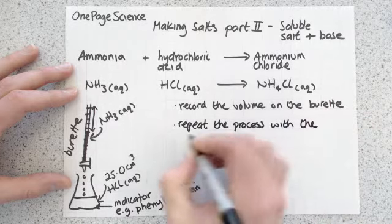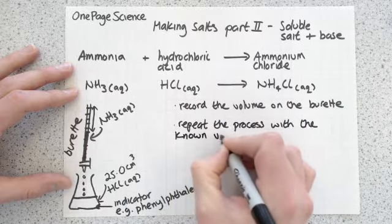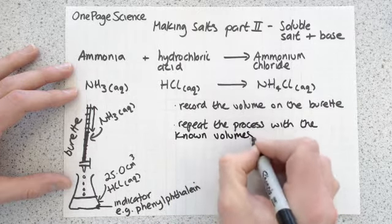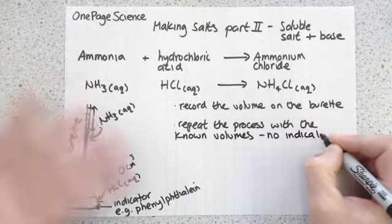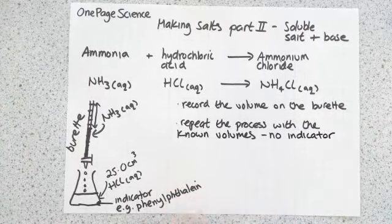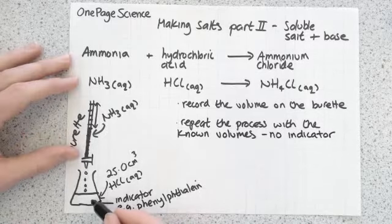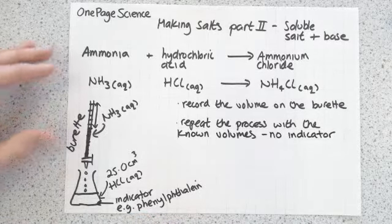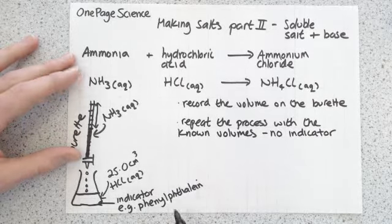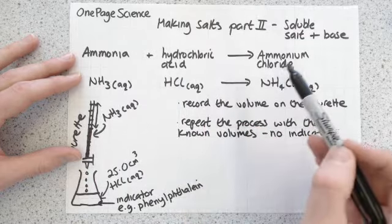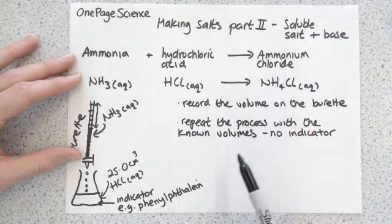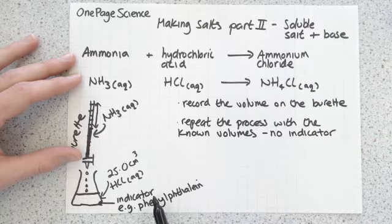You repeat the process using the known volumes from the first run, but very importantly with no indicator this time. You're then left with a solution in your conical flask containing only ammonium chloride — no ammonia, no hydrochloric acid, and no indicator to worry about.